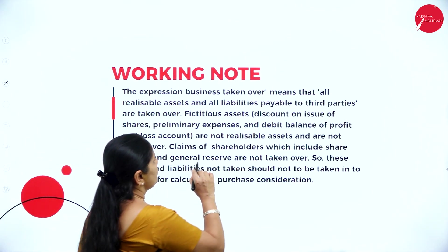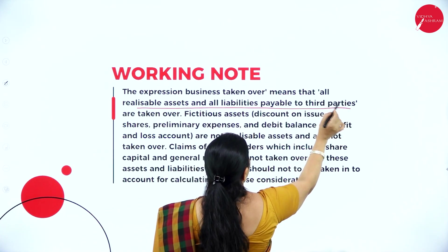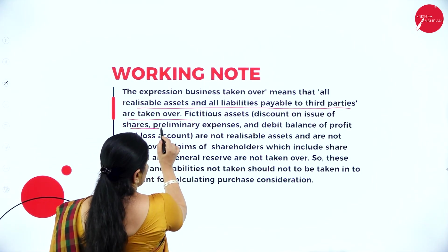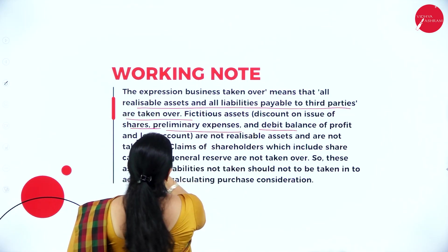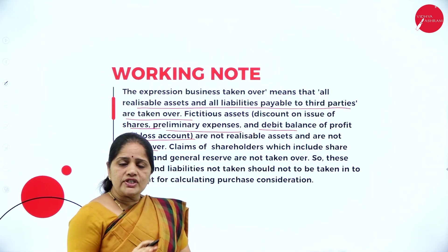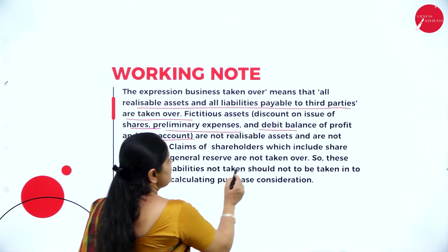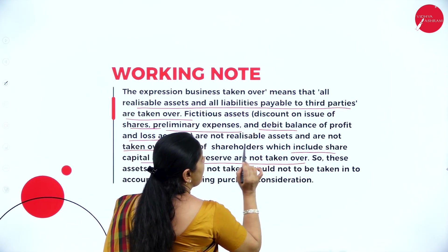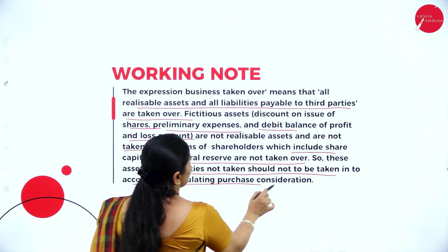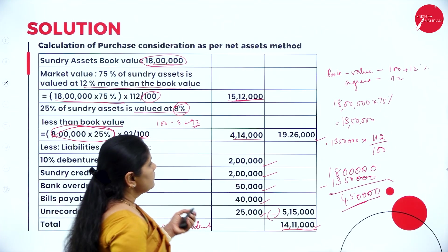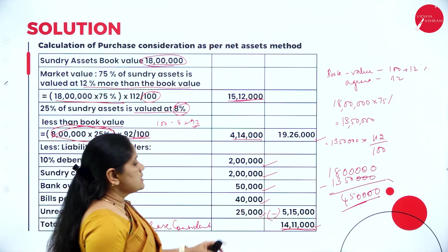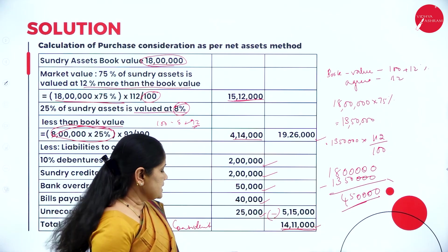Working note: the expression 'business taken over' means all realizable assets and all liabilities payable to third parties are taken over. Fictitious assets — that is, discount on issue of shares, preliminary expenses, and debit balance of profit and loss account — are not realizable assets and are not taken over. Claims of shareholders, which include share capital and general reserve, are also not taken over. Only realizable assets and liabilities payable to outsiders are considered to arrive at the purchase consideration of 14 lakhs 11,000.